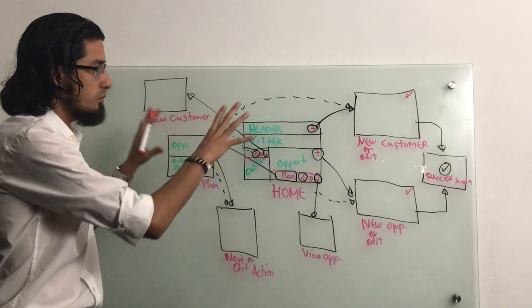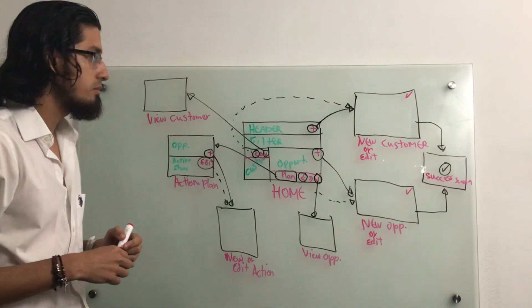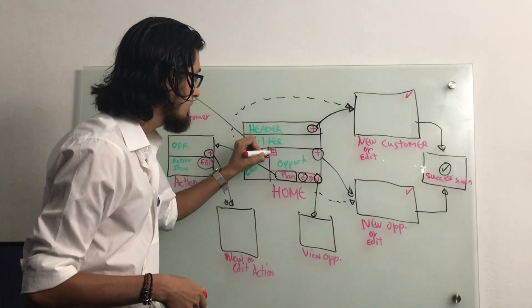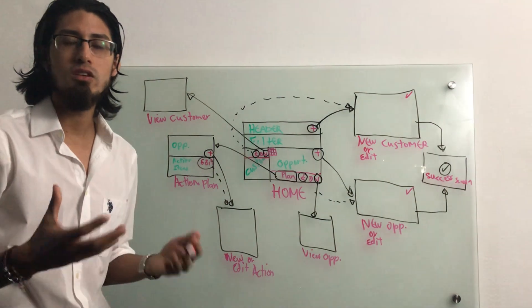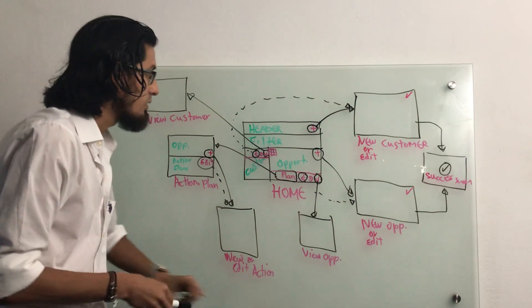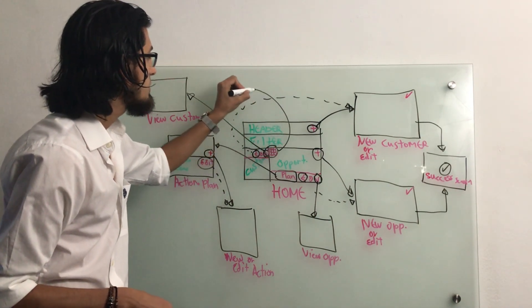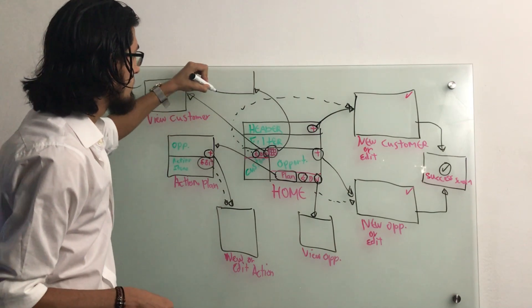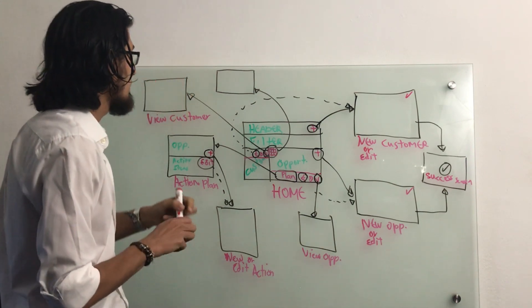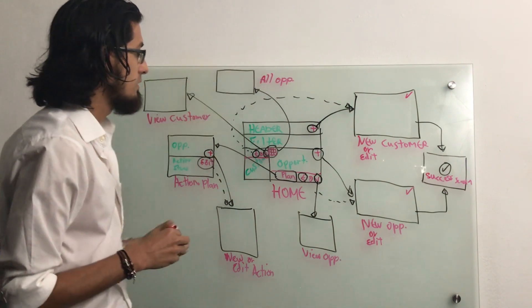I think we have most of the screens here, but there is one additional screen we are missing. Remember that from the opportunities section we have a button that will launch another screen to manage all opportunities. So if anybody clicks on that button, we will launch our last screen, which is going to be the 'all opportunities' screen.